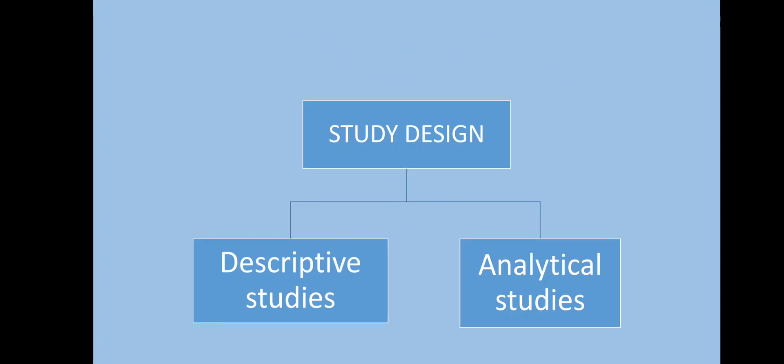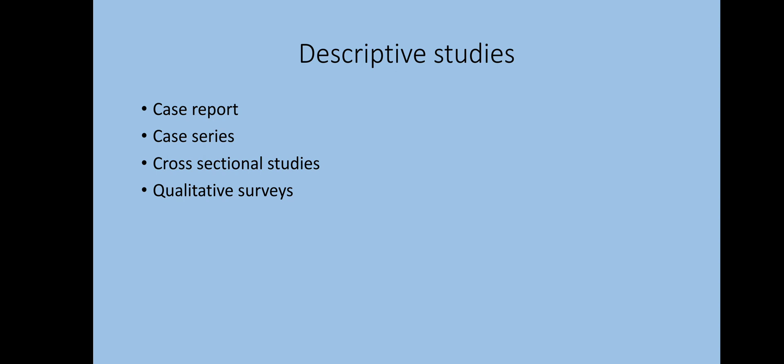In the last episode we started learning about study designs and we learned that in medical research, study designs are divided into two types: descriptive and analytical studies. In the last episode we learned about descriptive studies — observation-based studies where the researcher does not intervene, there are no control or comparison groups, and data is presented based on observations. The types are case reports, case series, cross-sectional studies, and qualitative surveys. Today we will see what cross-sectional studies and qualitative surveys are.